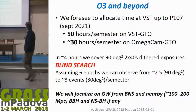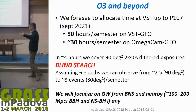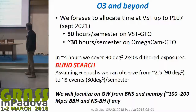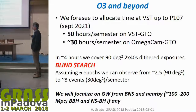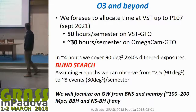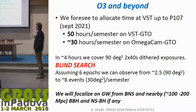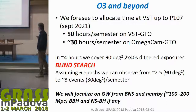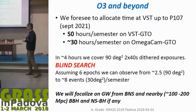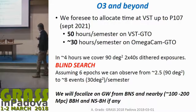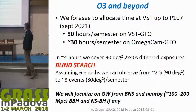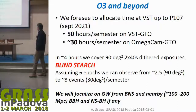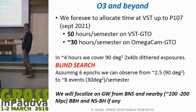What we foresee for O3 and beyond is that with VST and other facilities, we plan to spend 18 hours per semester following up gravitational wave events. We need four hours to cover 90 square degrees in a blind search, so assuming six epochs, we can follow between 2.5 and 8 events per semester, focusing on binary neutron stars and nearby neutron star–black hole binaries.